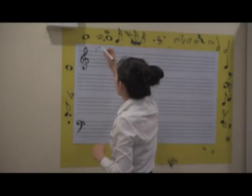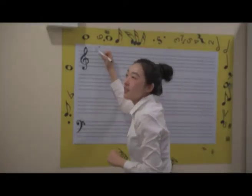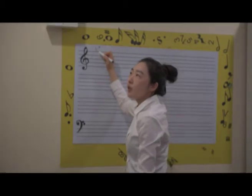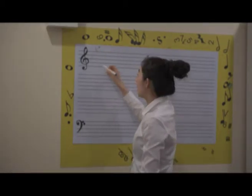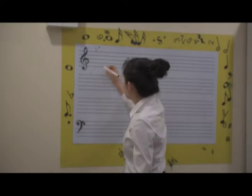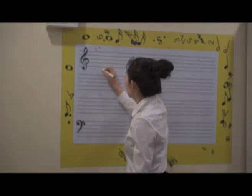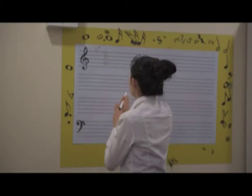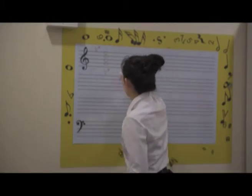Today we're going to learn dominant sevenths. I think I taught you the structure of dominant sevenths, right? Give me one example of dominant sevenths — can you do C major, for example? So this is C, D, E, F, G — and G, B, D, F. Good. And this is a dominant seventh, right? Yep.